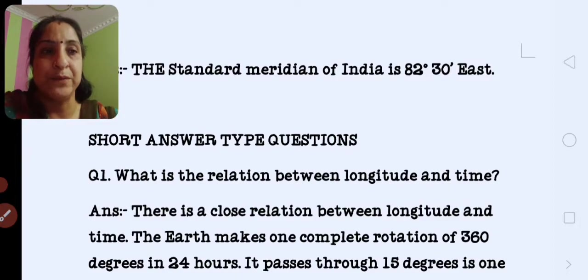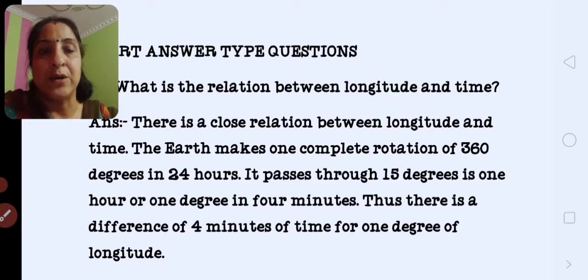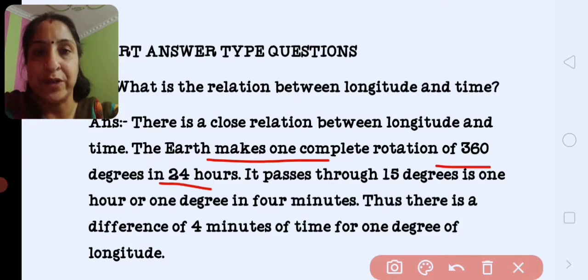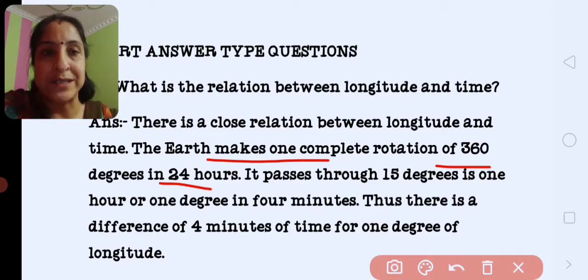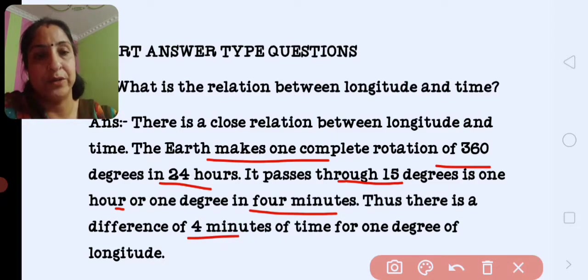Next is our short answer type question answer. First is what is the relation between longitude and the time? There is a close relation between longitude and time. The earth makes complete rotation of 360 degrees in 24 hours, and it passes 15 degrees in 1 hour, 1 degree in 4 minutes. Thus there is a difference of 4 minutes of time for 1 degree of longitude.